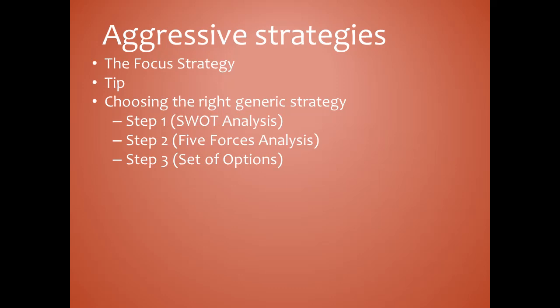The five forces are: competitive rivalry, supplier power, buyer power, threat of new entry, and threat of substitution. Step three, set of options, means comparing your SWOT analysis and viable strategic options with the results of your five forces analysis. For each strategic option, ask how you could use that strategy to reduce or manage supplier power, reduce or manage buyer power, come out on top of competitive rivalry, reduce or eliminate the threat of substitution, and reduce the threat of new entry. Select the generic strategy that gives you the strongest set of options.